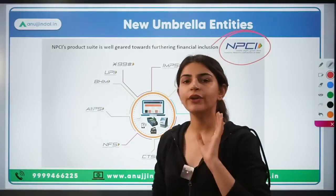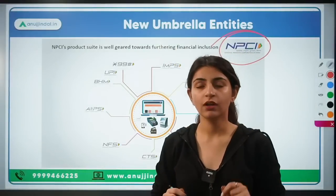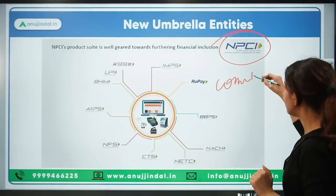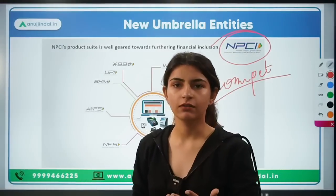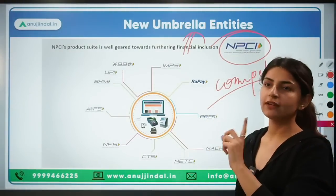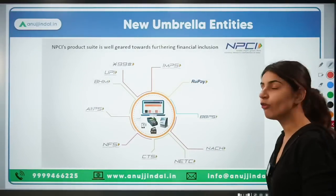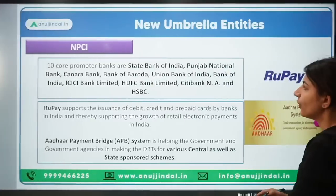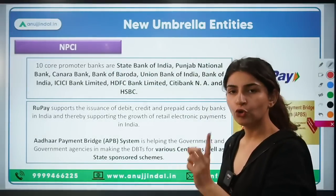NPCI is currently the only organization working towards the digital retail payment system. To bring competition into the economy, RBI is bringing new umbrella entities into the picture — they will work as an alternate to NPCI. UPI transactions in the month of December alone reached 7.8 billion transactions, creating a huge burden on NPCI. That is why new umbrella entities are going to be brought out as an alternate.